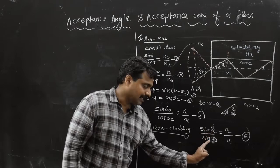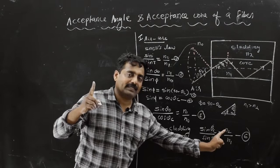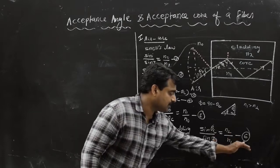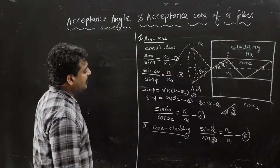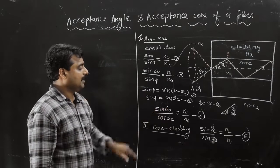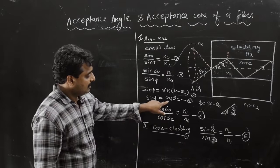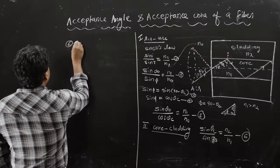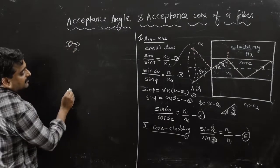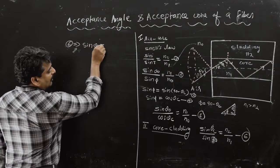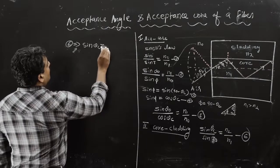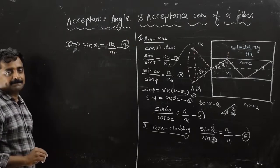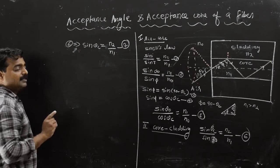Since sin 90 equals 1, we get sin theta c equals n2 by n1. Here n2 is the refractive index of cladding and n1 is the refractive index of core. That is equation number 7.